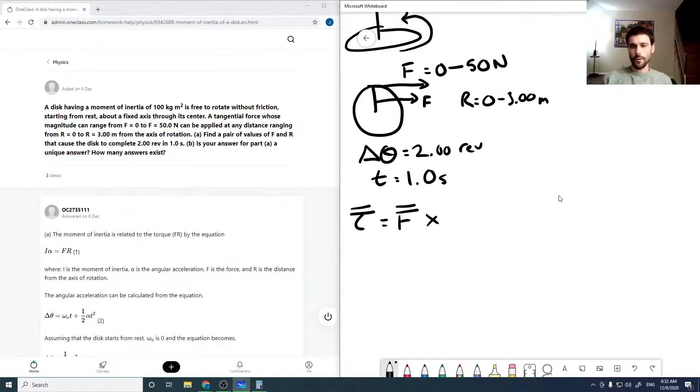Torque is F cross R, where R is the radius. But we can simplify this cross product by writing this as just F R sine theta, where theta is the angle which is acting. As it's tangential, it's 90 degrees. The sine of 90 is 1, and so this is just the force times the radius. So we have some F R.